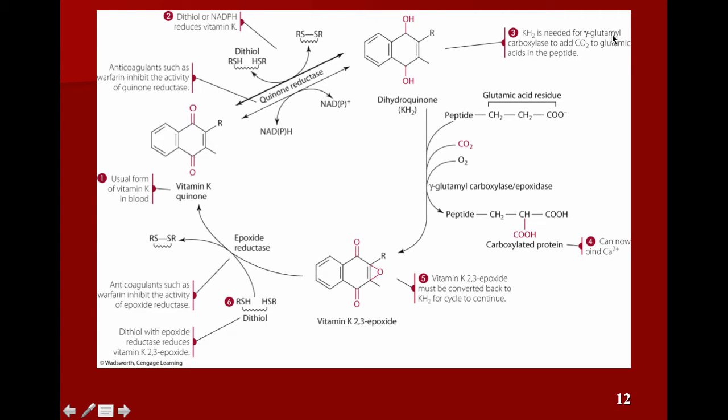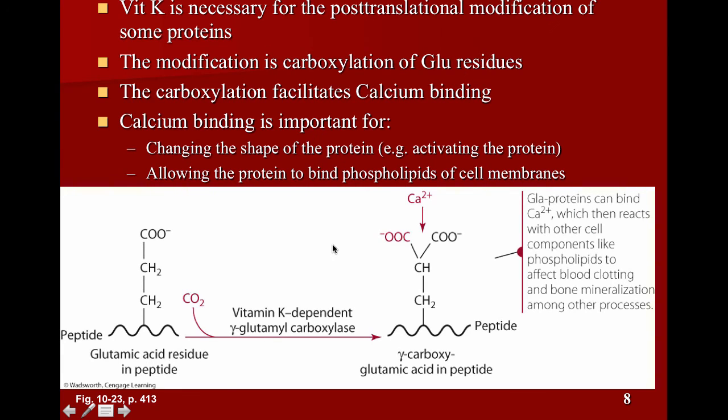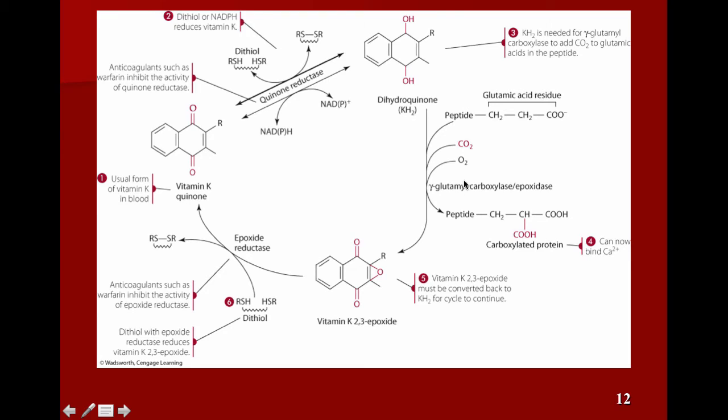KH2 is needed for gamma glutamate carboxylase to add CO2 to glutamic acids in the peptide. So here's the form of vitamin K that vitamin K dependent gamma glutamate carboxylase requires. So this enzyme right here is the same one that we talked about here, vitamin K dependent gamma glutamate carboxylase. So this is what it's doing. Remember, it's taking a CO2 group and an oxygen group, and basically here's a peptide, here's the side chain of glutamate, and now it's adding a second carboxylic acid group, and this is a bad drawing, because at physiologic pH, these carboxyl groups are deprotonated, so they're negatively charged.